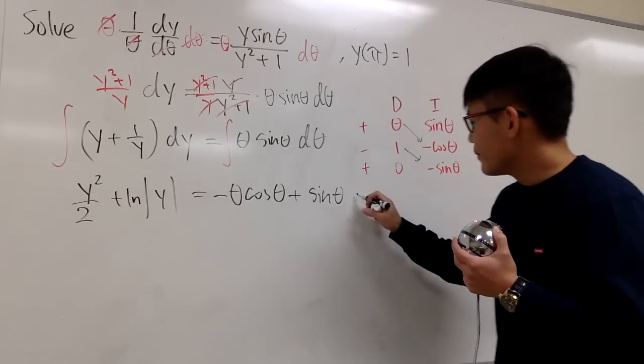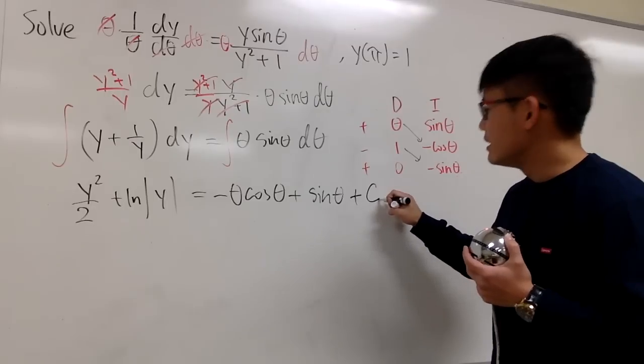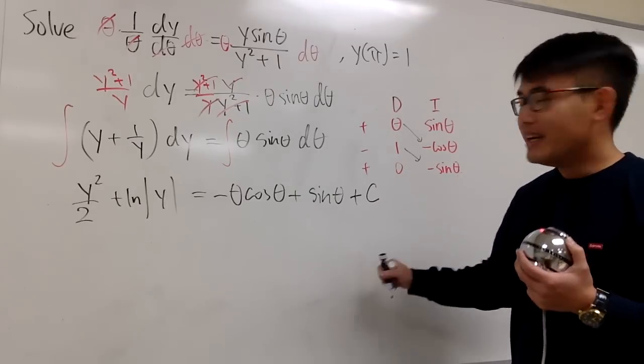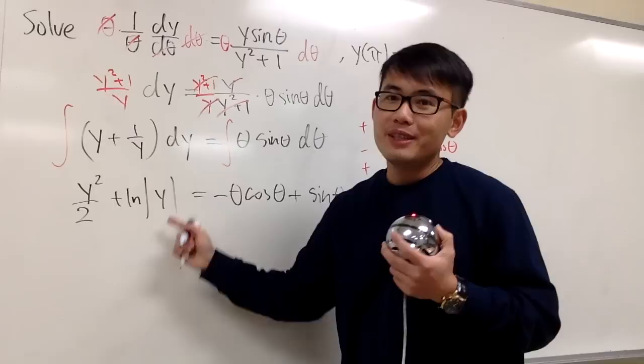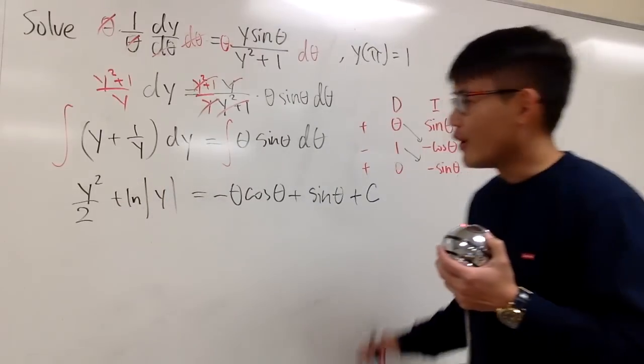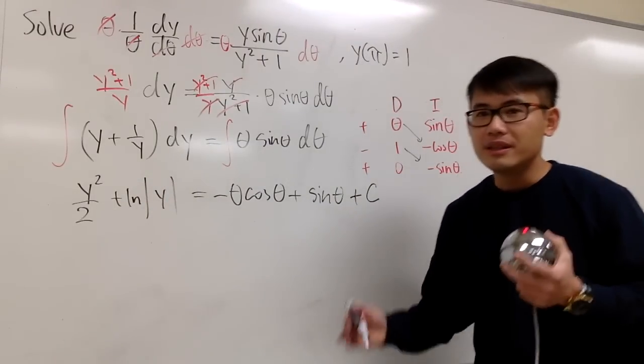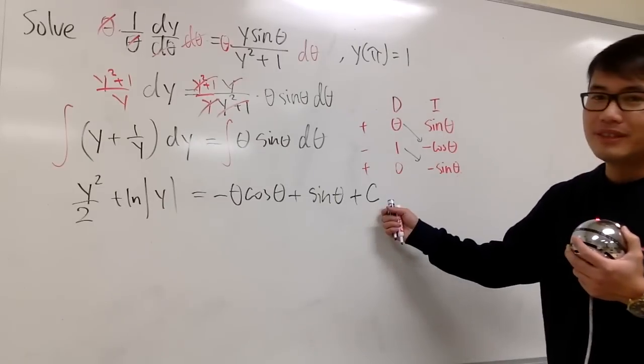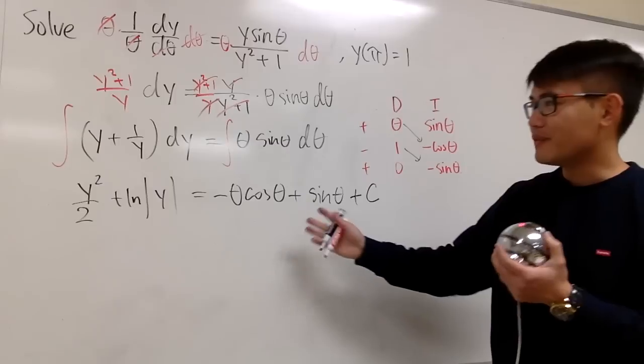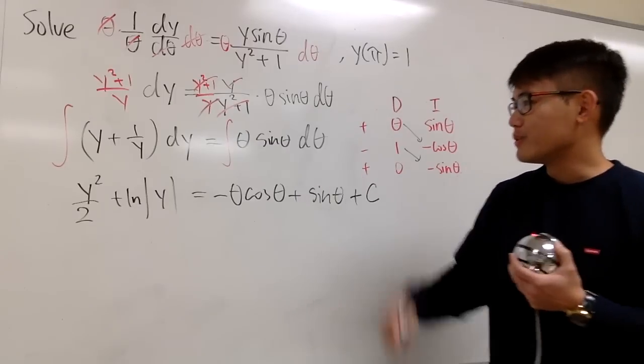So this is it. And now, we are going to put down plus C on the right-hand side. I'm just going to write down plus C, because I don't think there's a way for me to isolate y. So our answer will have to be in the implicit form. Y cannot be isolated. This is enough. That's it for the solving part, for the integration part.